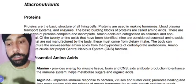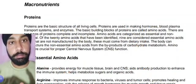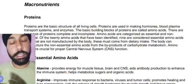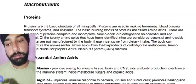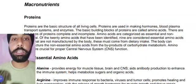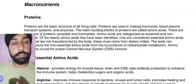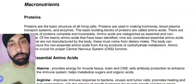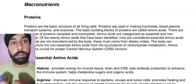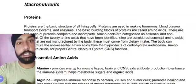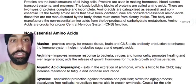The nine essential amino acids are not manufactured by the body — they must come from dietary intake. The other 11 are called non-essential amino acids, which are manufactured by our body from the by-products of carbohydrate metabolism.